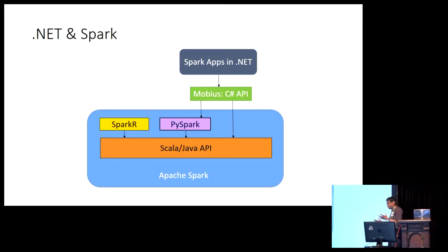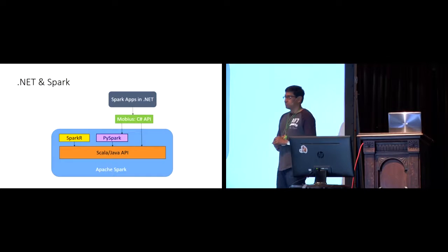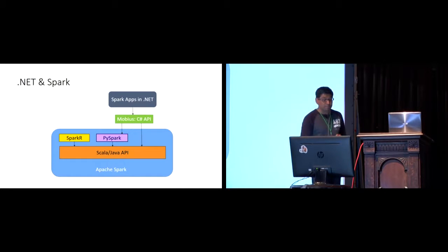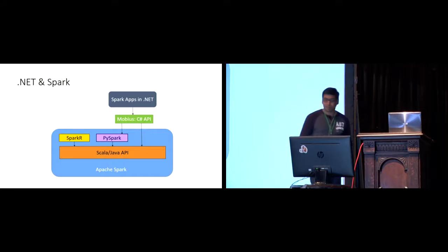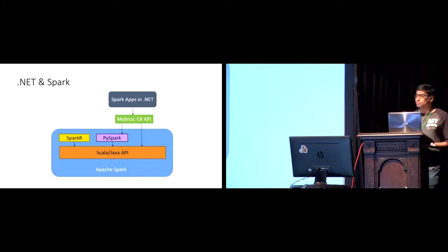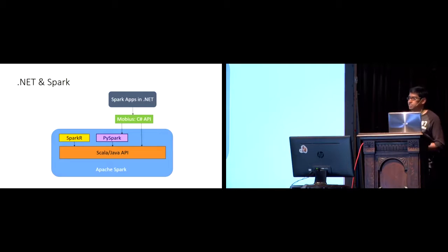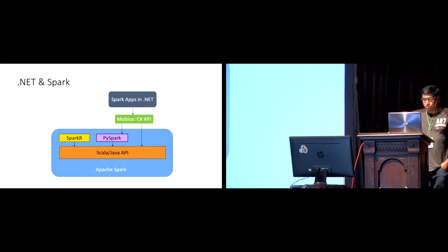Here's what the interaction between a .NET application and Spark looks like. On top, you have an application written completely in .NET — the developer doesn't need to write a single line of Java or Scala. The Mobius API underneath depends on the public Java/Scala API, and also a tiny component from PySpark's Python implementation. Most of it relies on the public API, and that small PySpark component is used after consulting with PySpark developers.